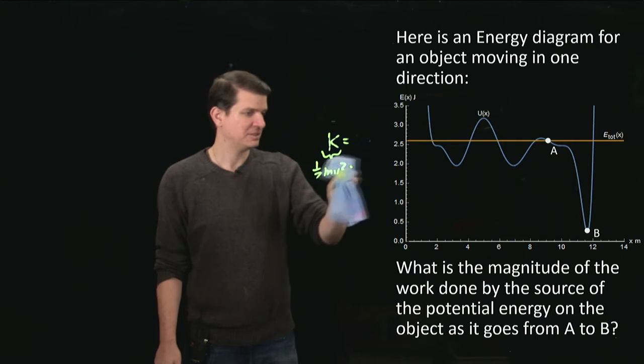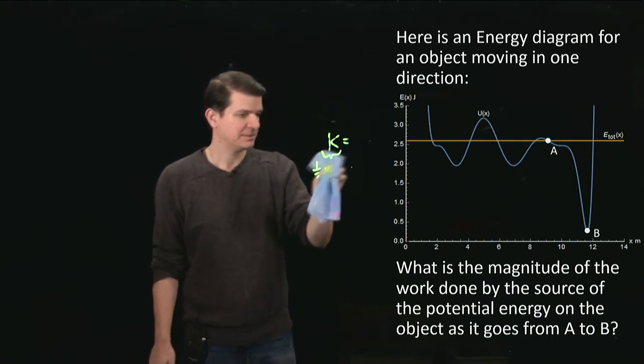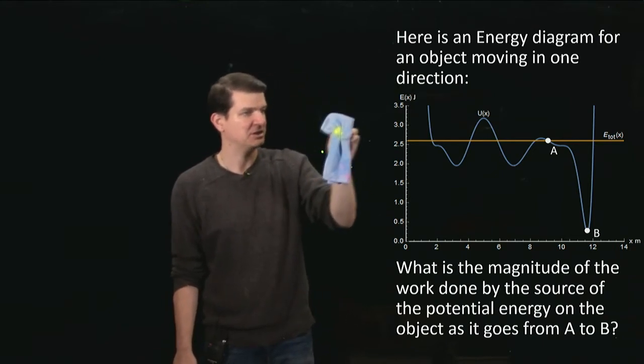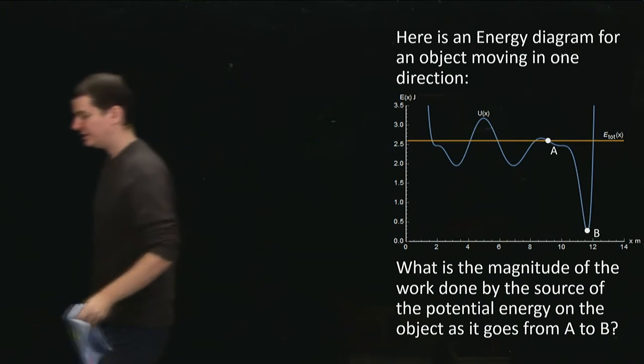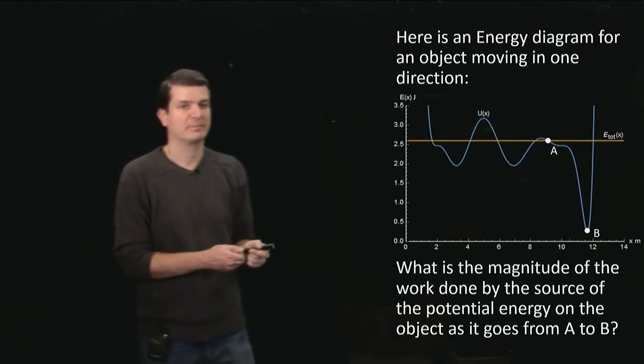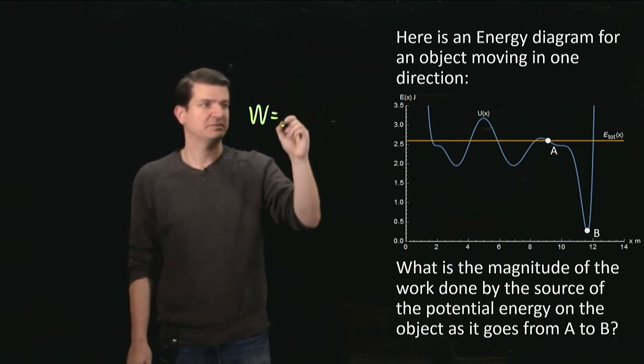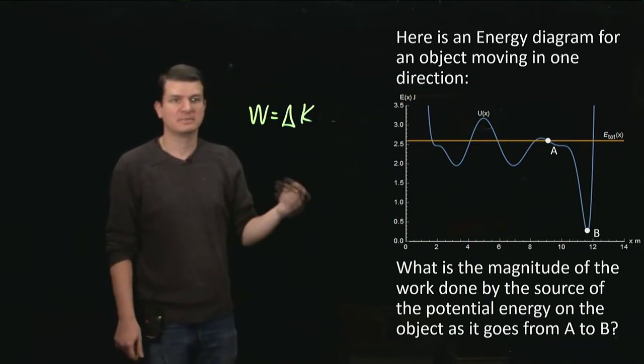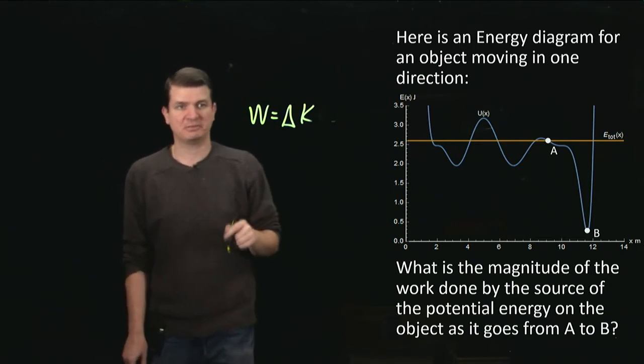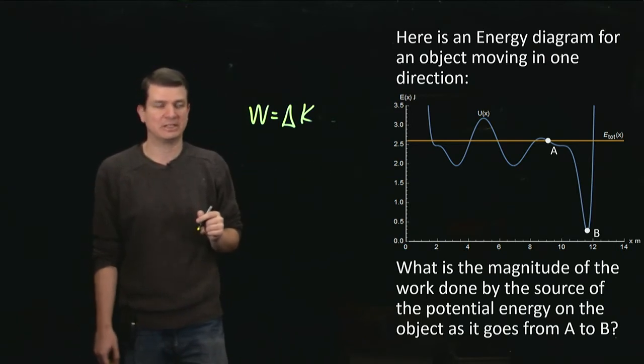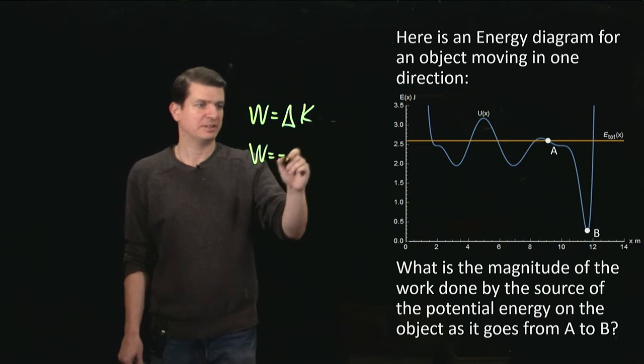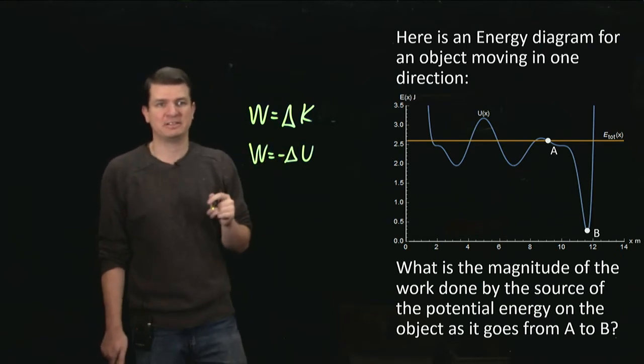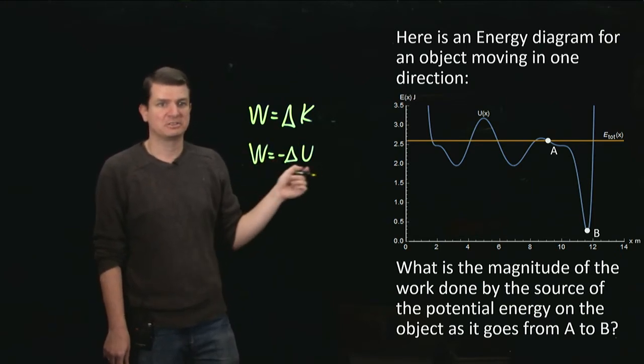Now, to answer this, it's really easy when we think about work in terms of what it does to energy. So remember, we've got the work energy theorem that tells us that actually the net work, which in this case is just the work done by whatever is causing this potential energy, that net work is equal to the change in kinetic energy. So the work done is delta K. And some of you may also remember that for a conservative force, which is one that gives rise to a potential energy, the work is equal to minus the change in potential.